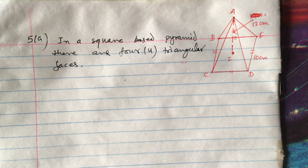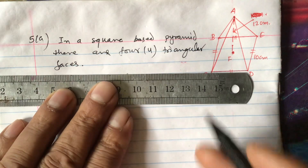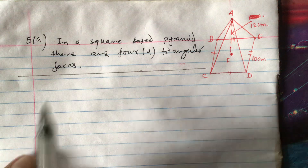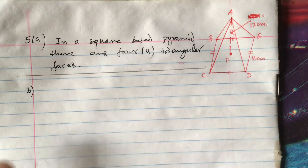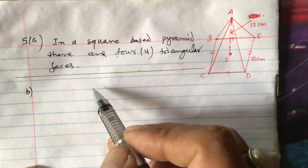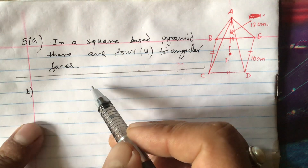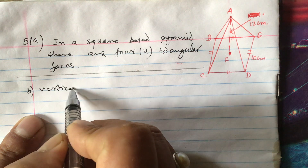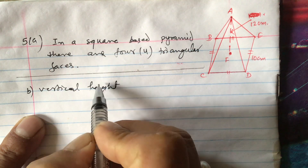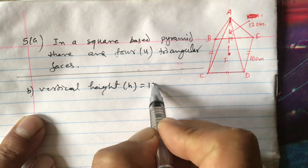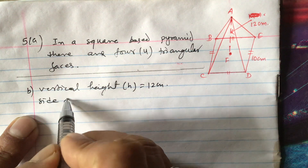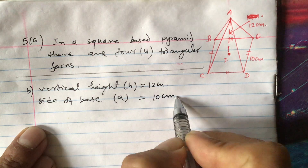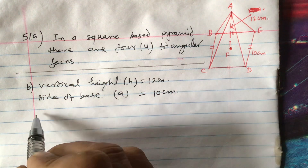The answer to part a is completed; draw a line to separate it. Now for part b, we are asked to find the volume of this pyramid. For volume, the vertical height h is equal to 12 centimeters and the side of the base, denoted by a, is equal to 10 centimeters.